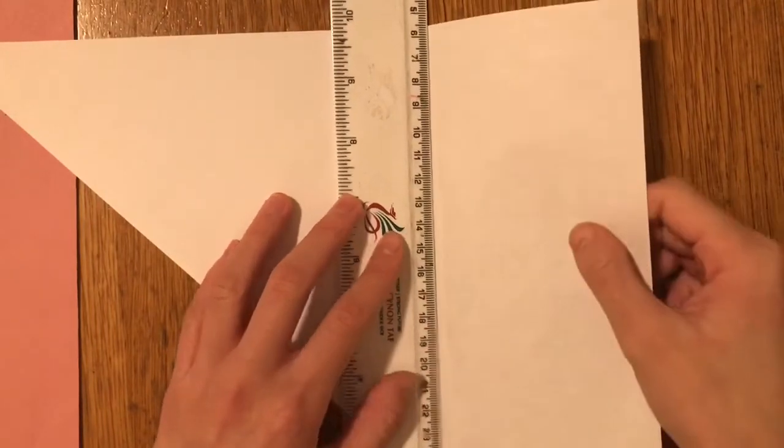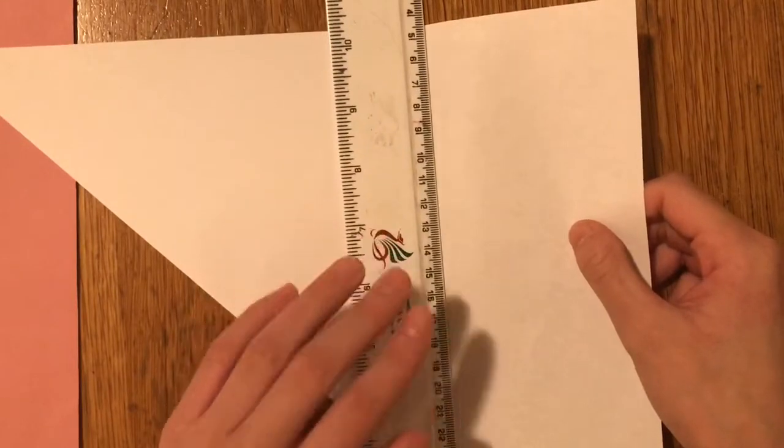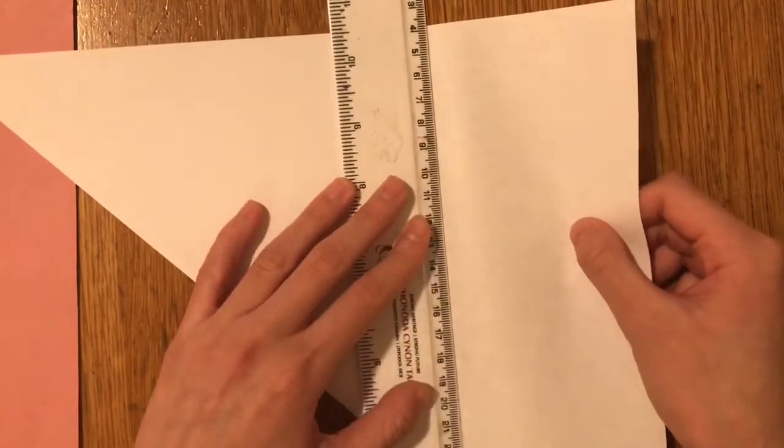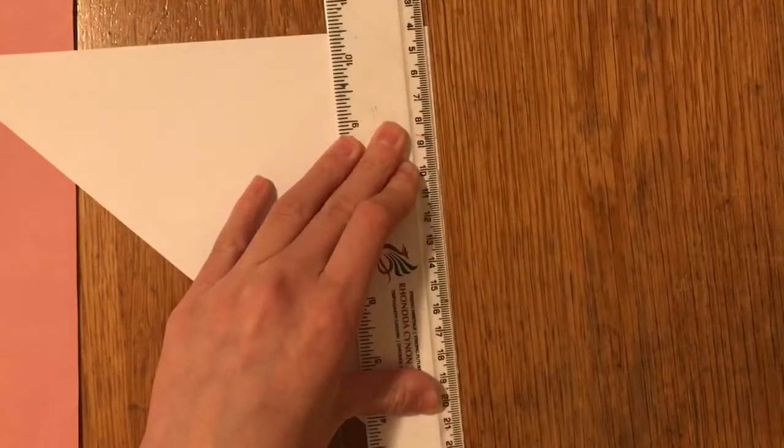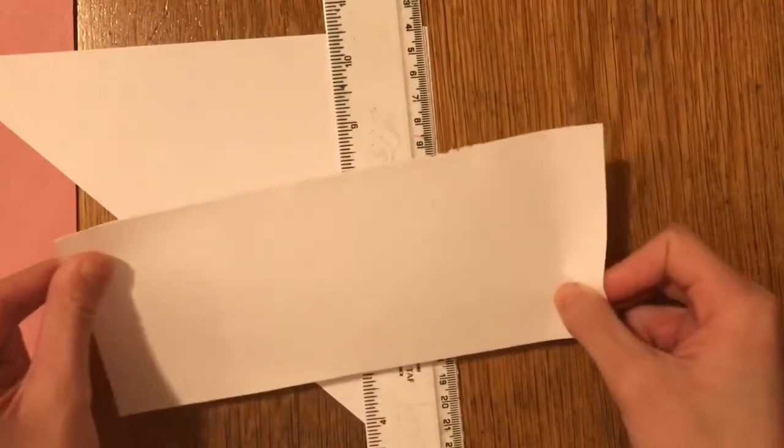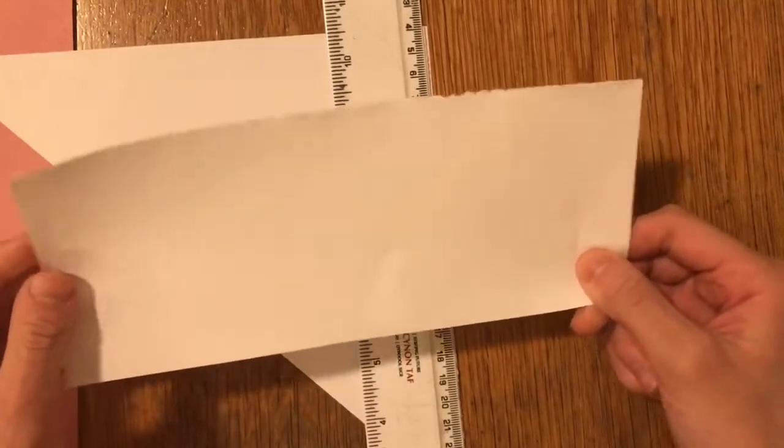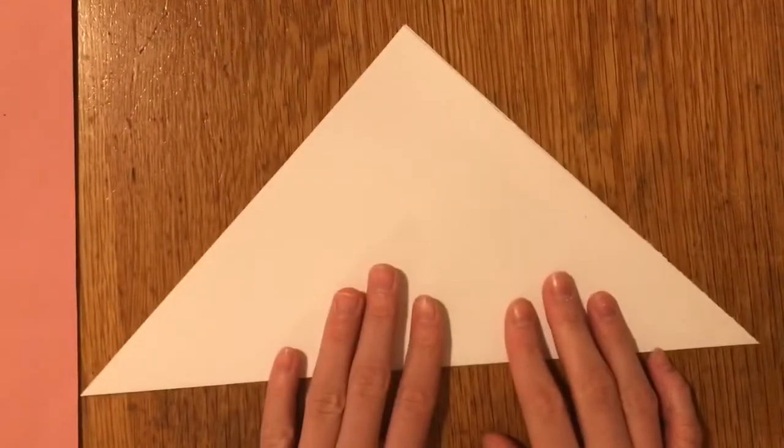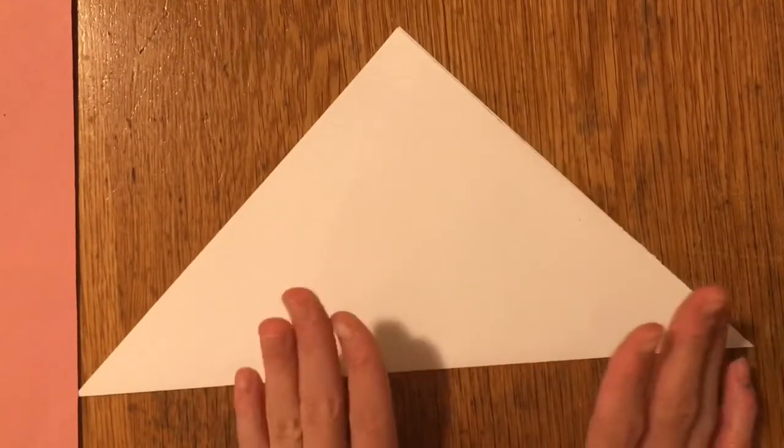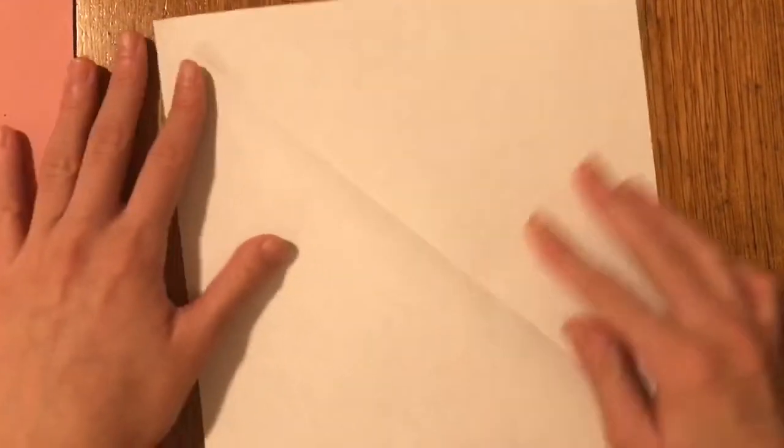So I'm just going to use them to put right next there. This is your excess paper you don't need to use. And then you're left with this triangle. Open it up and you have a square. This is your origami paper.